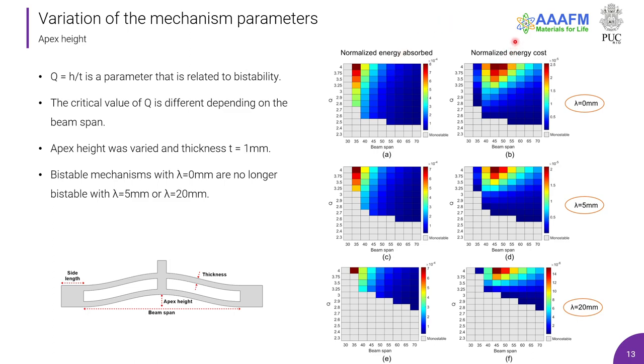The left column here is the normalized energy absorbed, and the right one is the normalized energy cost, which is the energy that the mechanisms must spend to leave the bistability position. When we compare with these other two values of side length, we can better understand the effect of the side length. Only these mechanisms are bistable. With 20mm, we can see a difference from this image to this image. With no side length, the critical value of Q is 2.5, and with 20mm, the value is 2.8.